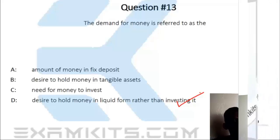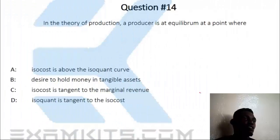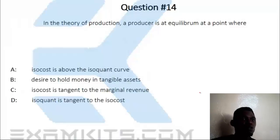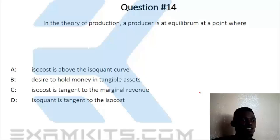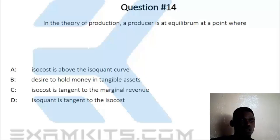Question 14. The theory of production: a producer is at equilibrium at a point where the iso-cost is tangent to the iso-quant. Option D is the correct answer.